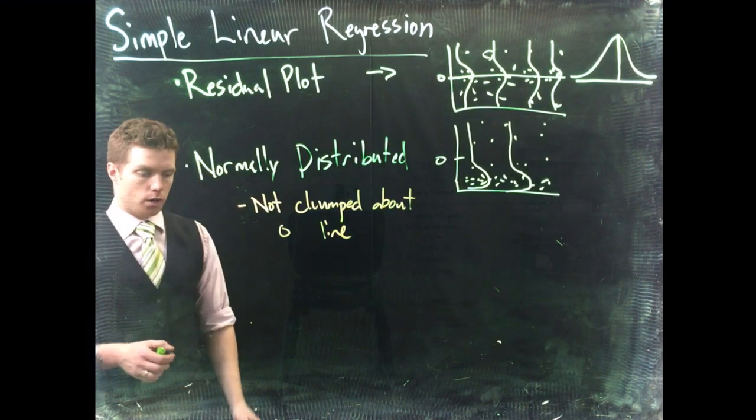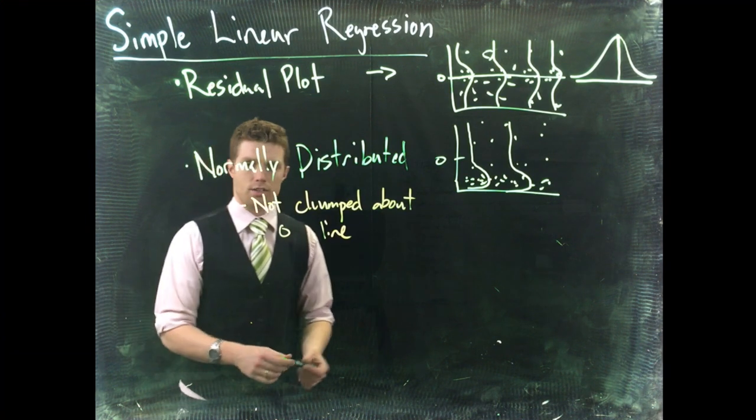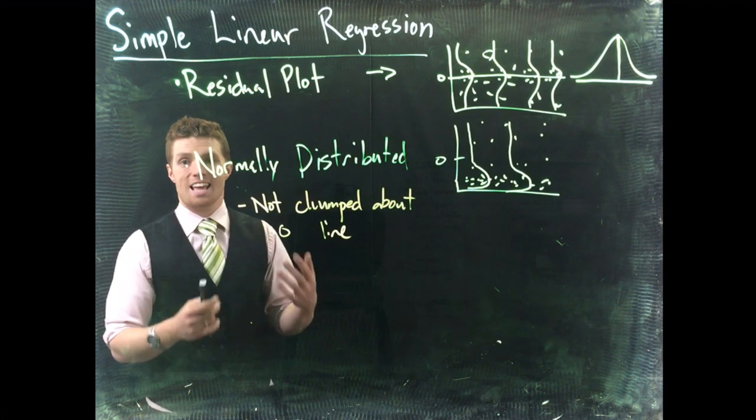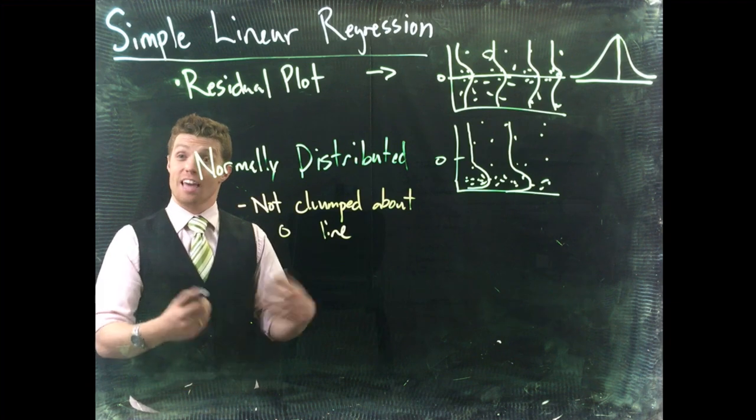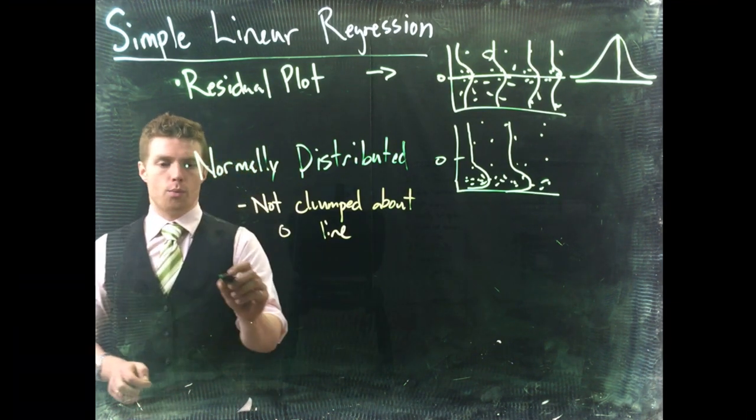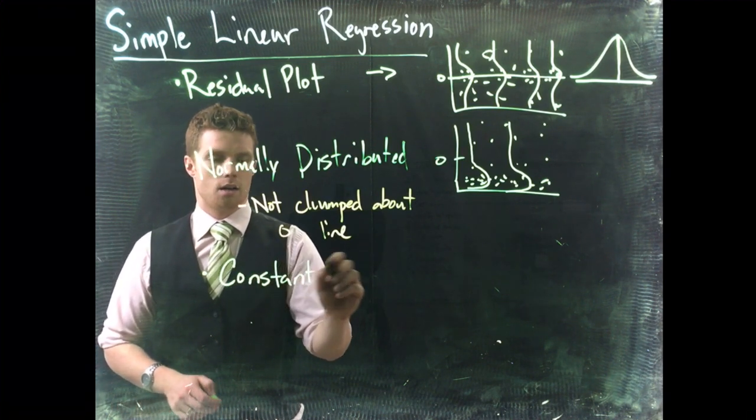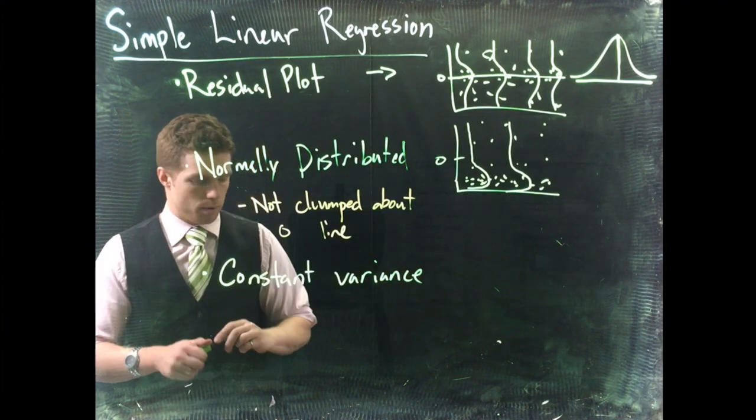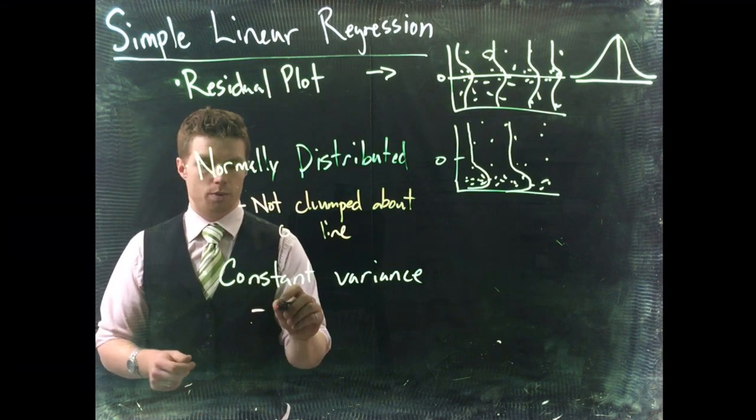Okay so we've got one more. It's got a really big fancy name and a simple definition. It's called we need our data to be homoscedastic or the problem that we see is that we see heteroscedasticity. Two really big words but really what we are looking for is constant variance and the problem that we're going to see is fanning.